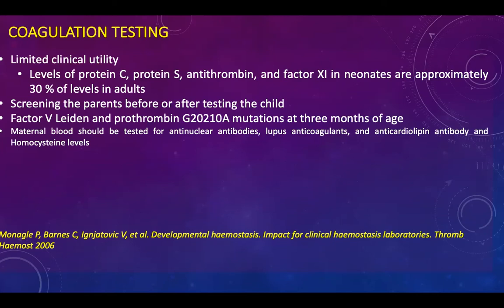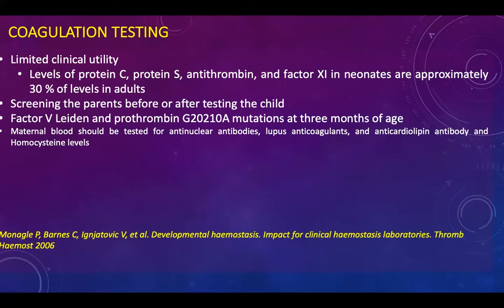It is important to note that in a couple of babies with stroke, when coagulation studies were done, the protein levels appeared low, but when checked against standard reference ranges for the neonatal age group, they were actually normal — as these values are approximately 30% of adult levels as reported by the lab. Screening of parents can also be done, and if the facility is available, certain mutations can be checked. Maternal blood should be tested for anti-nuclear antibodies, lupus anticoagulants, and homocysteine levels.